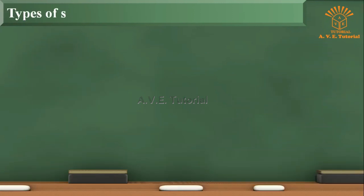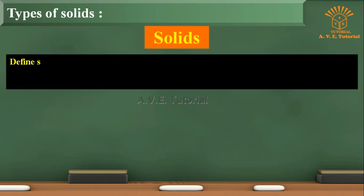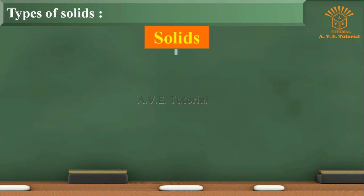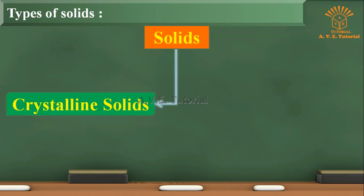Next topic is Types of solids. Before starting types of solids, you should know the definition of solids. A solid is defined as that form of matter which possesses rigidity and hence possesses a definite shape and a definite volume. There are two types of solids, namely: first, crystalline solids; second, amorphous solids.